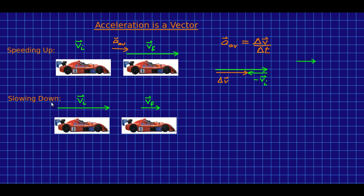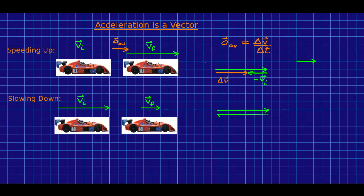Now suppose instead the driver of the race car puts on the brakes and slows down. We're going to do the same thing. We're going to take our vi, flip it around end to end to get negative vi, and add that to vf by putting them head to tail.